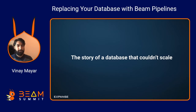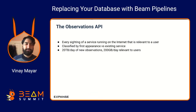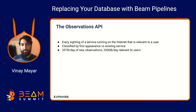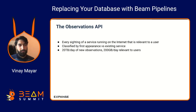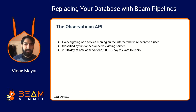That brings me to the problem today: the story of a database that couldn't scale. This database was used to power a particularly problematic API, which we'll call the Observations API. This API was returning every single sighting of a service on the internet that was relevant to one of our users, classifying those sightings by whether it's an appearance or something existing. We're processing 20 terabytes per day of new observations from our global IP scans, and about 1% are relevant to users — a lot of data to add to an API every day.